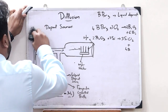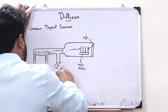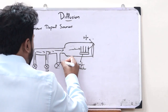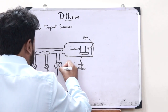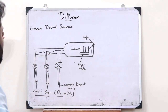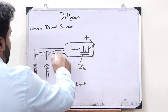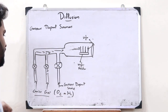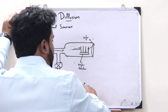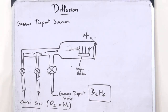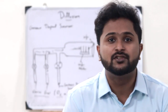Next, let us see the diffusion from a gaseous dopant source. In the case of diffusion from a gaseous dopant source, we directly give this particular gaseous dopant source over here like this. This gaseous dopant source, when it reaches here, along with these particular carrier gases, gets diffused on top of these particular wafers. A typical example of a gaseous dopant source is Diborane, or B2H6. These are simply the different types of diffusion based on the dopant sources.